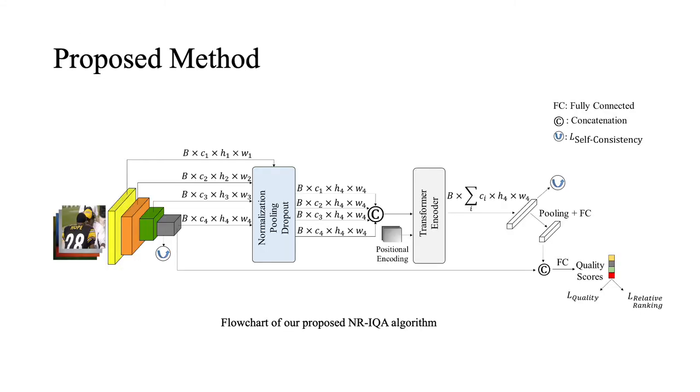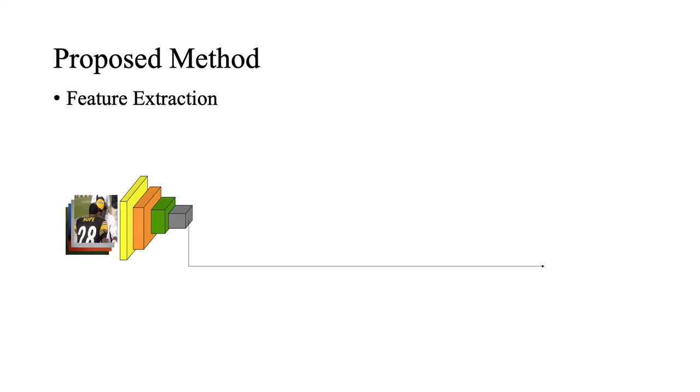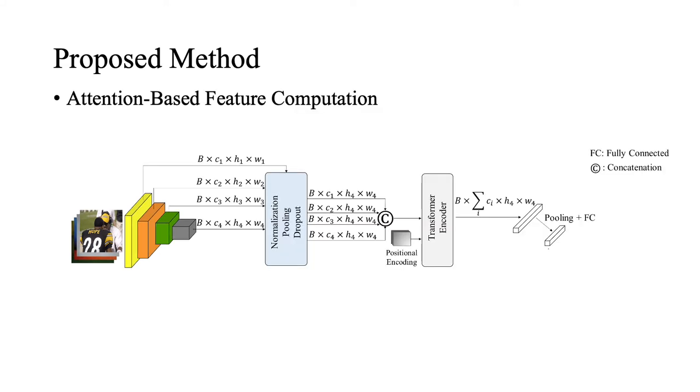Here we can see the complete pipeline of our proposed model. We capture local structure information and have a global representation of the image. We use deep convolutional networks and extract features from the last layer of the deep CNN. We then compute the non-local representation by modeling the features from different layers as a sequence of information and send them to the transformer encoder along with the positional encoding.